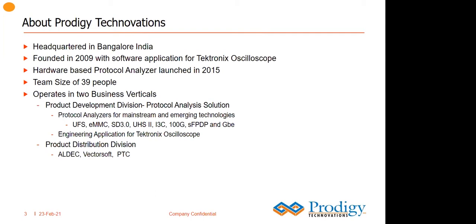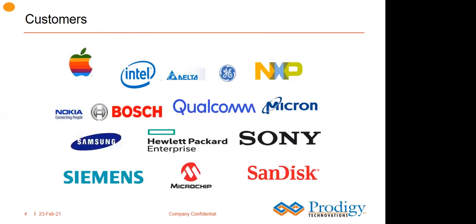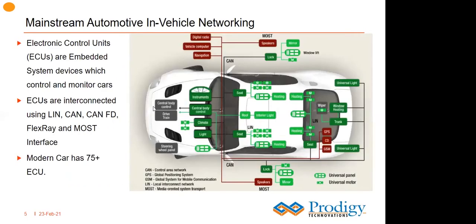We have a range of products today. Our team size is around 39 people with two business verticals — about 90% of the team works on product development for different technologies, while we also do some distribution in India of American company products. Our customers are mostly semiconductor and systems companies, including Intel, Qualcomm, Hewlett Packard, Sony, SanDisk, Microchip, NXP, Kioxia, Samsung, and others.